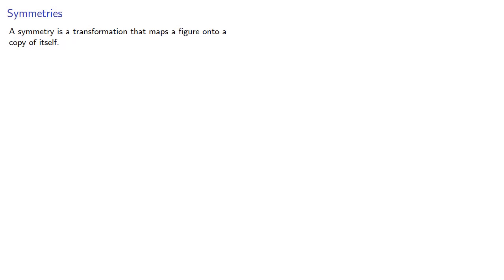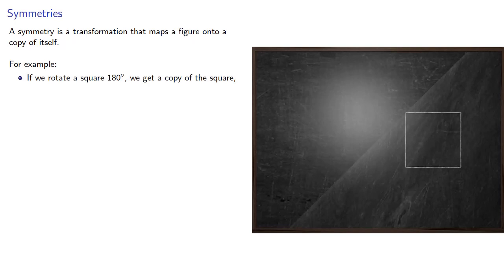A symmetry is a transformation that maps a figure onto a copy of itself. For example, if we rotate a square 180 degrees, we get a copy of the square.